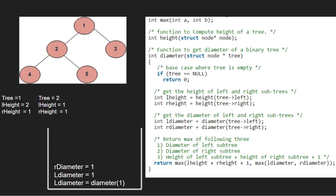Now we return the max of l_height plus r_height plus 1 and l_diameter and r_diameter. Since all are 1, we return 1 plus 1 plus 1 which is equal to 3. So l_diameter for node 1 is 3.